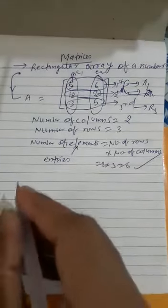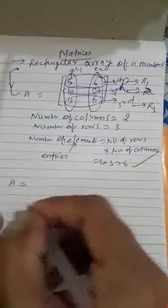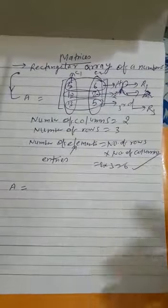We have a second example over here. Let us consider a rectangular arrangement of numbers, that means we have matrices.